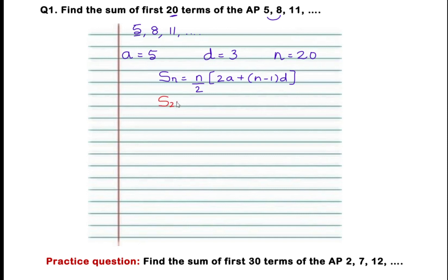S20 equals 20 divided by 2, into 2 times A which is 5, plus bracket N which is 20 minus 1, into D which is 3. In this step we have just substituted the values of N, A, and D.